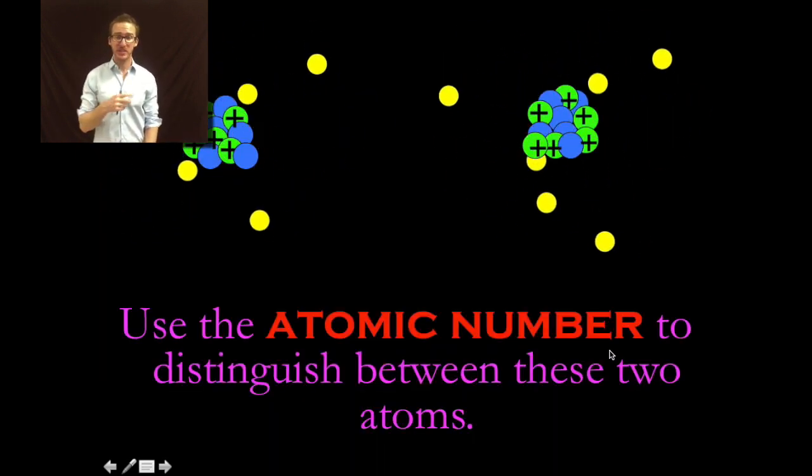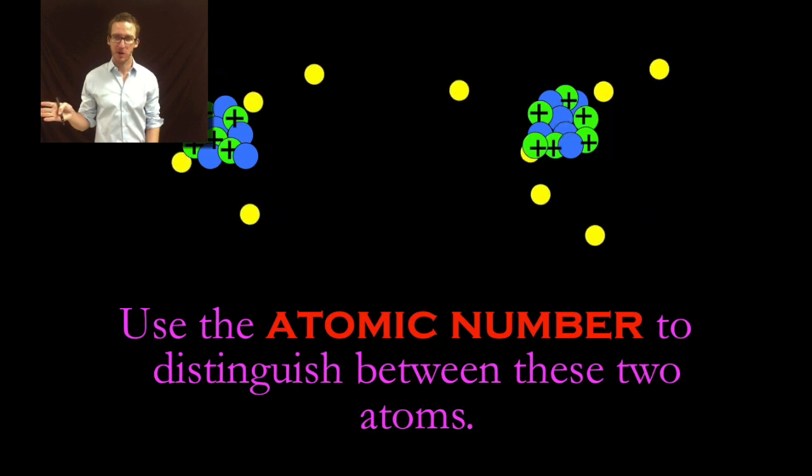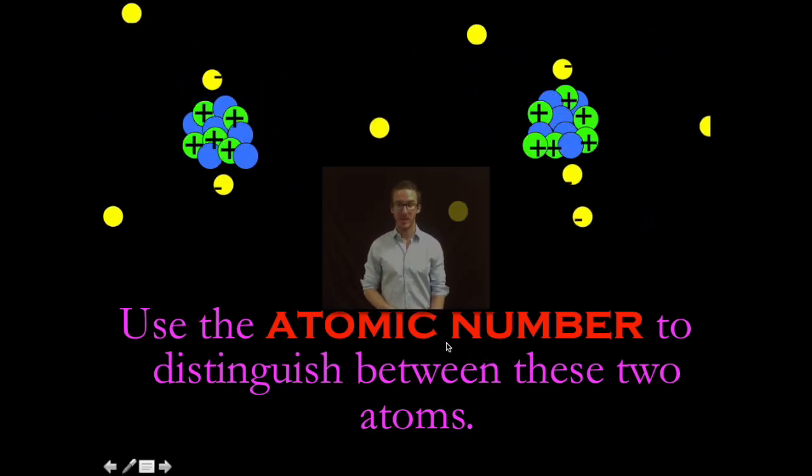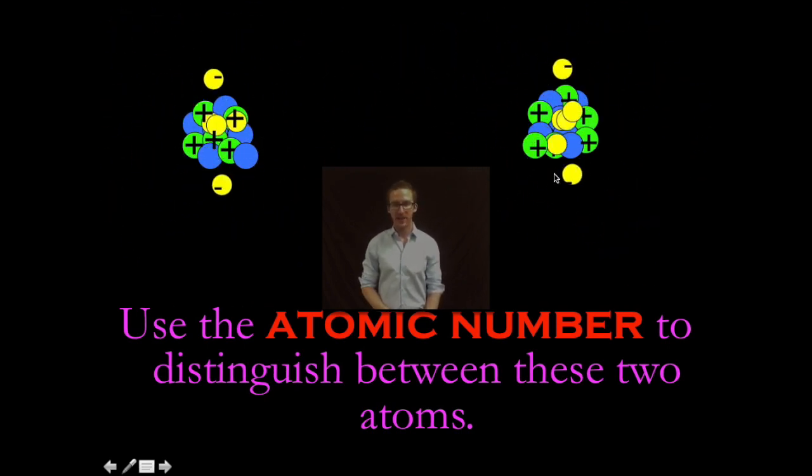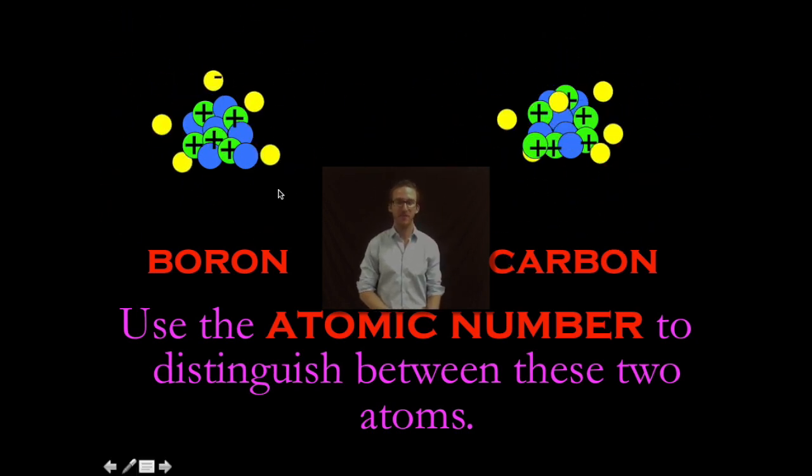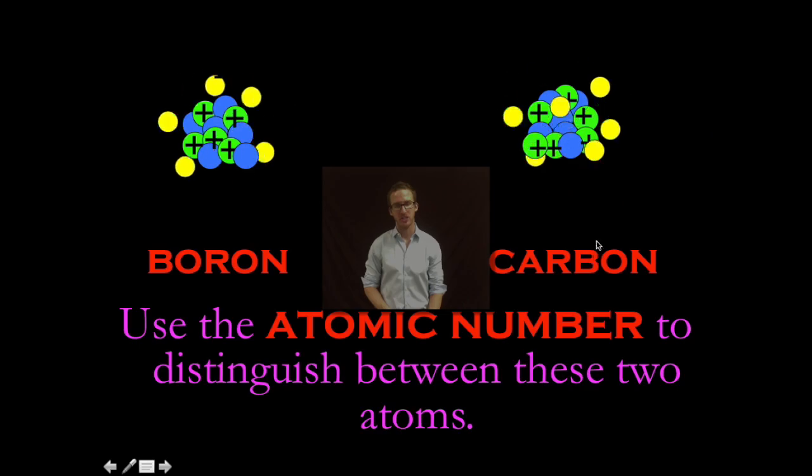As you take a look at the screen, try not to go insane by all those moving particles. We want to use the atomic number to distinguish between the two atoms. As I look at the atom on my left there are one, two, three, four, five positive green protons. Atom on the right, one, two, three, four, five, six green positive protons. As I take a look at my periodic table, atomic number five belongs to boron, atomic number six belongs to carbon.